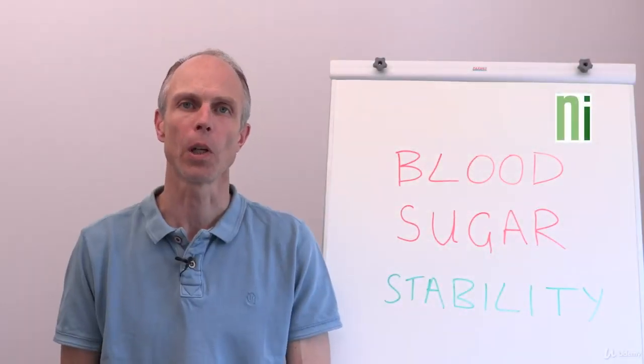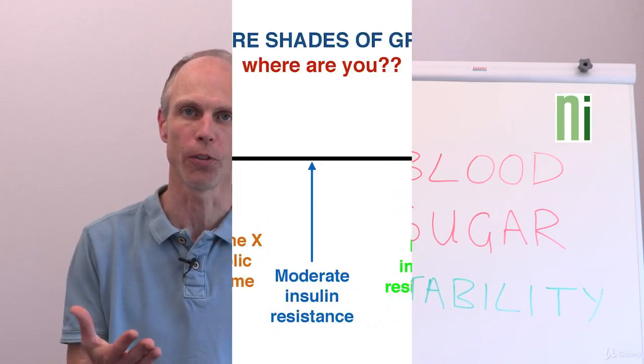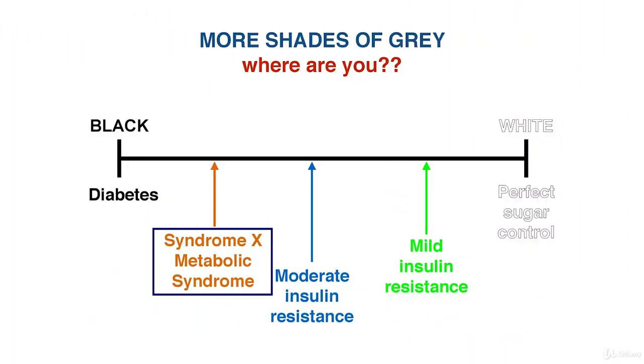Progressively, the cells become more and more resistant to insulin, and what happens is you get into a state called metabolic syndrome, which is more than just bad glucose control.